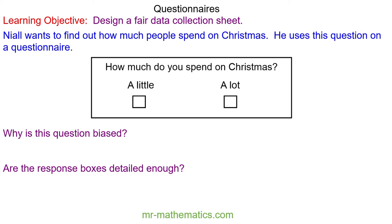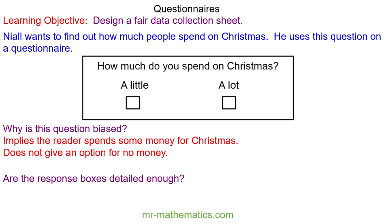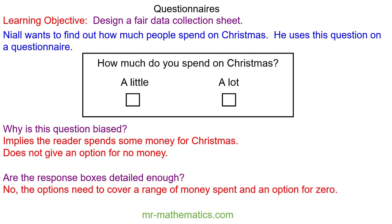Why is this question biased? It implies that the reader spends some money on Christmas because it does not give an option for no money. The response boxes are also not detailed enough — the options need to cover a range of money spent and include an option for zero.